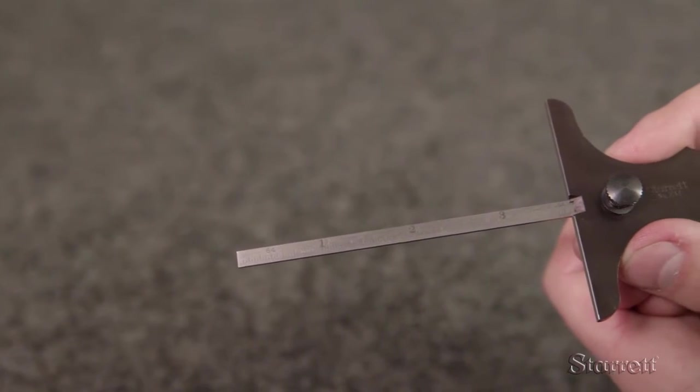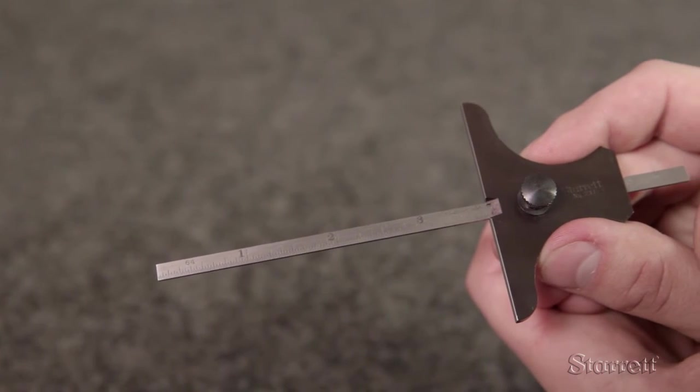The 237 steel rule depth gauge is a simple tool that lets you determine the depth of a slot, hole, bore, or other feature from a flat surface. It's very easy to use and can measure to the closest 64th of an inch.